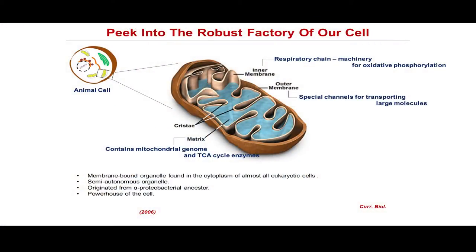The mitochondria is a double-membrane-bound organelle found in almost all eukaryotic cells. The outer membrane consists of special channels for transporting molecules. The inner membrane houses the machinery for oxidative phosphorylation, and the matrix contains mitochondrial enzymes, TCA cycle enzymes, and the DNA. The mitochondria is a semi-autonomous organelle — though it has a genome of its own, it is dependent on the nuclear genome for various functions. It originated from an alpha-proteobacterial ancestor, Rickettsia prowazekii, and is known as the powerhouse of the cell since it produces ATP, the energy currency of the cell.